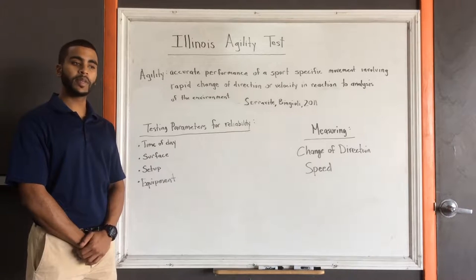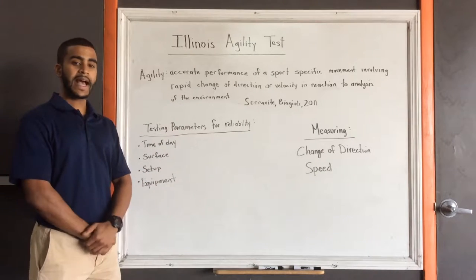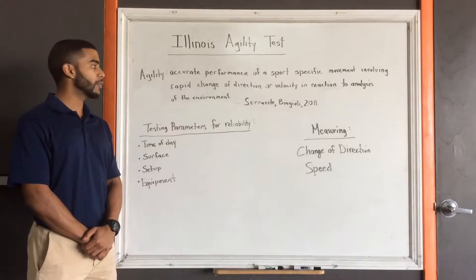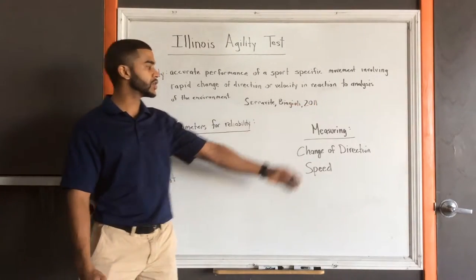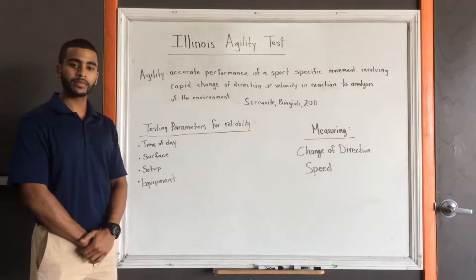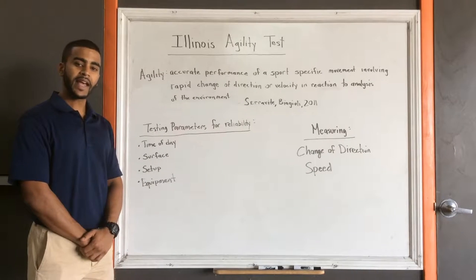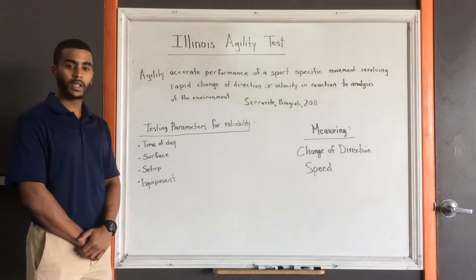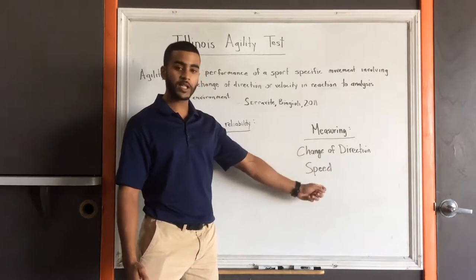Let us first begin by defining agility. Agility is the accurate performance of a sport-specific movement involving rapid change of direction, motor velocity, and reaction to analysis of the environment. Due to the closed nature of this test, meaning the athlete is not required to respond to a stimulus, what we are really looking at is change of direction capabilities and speed.